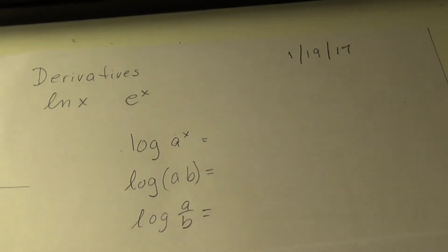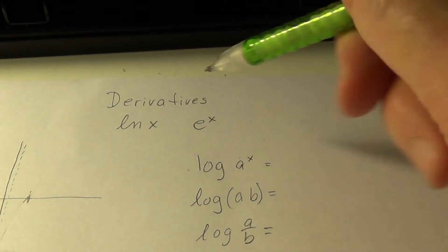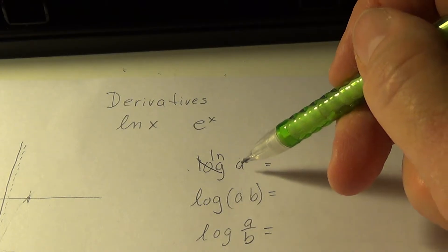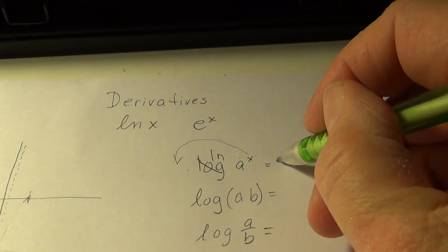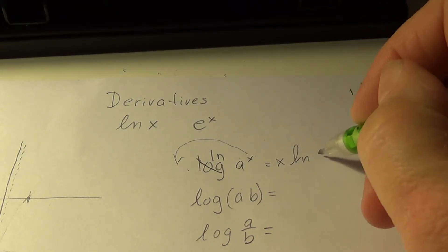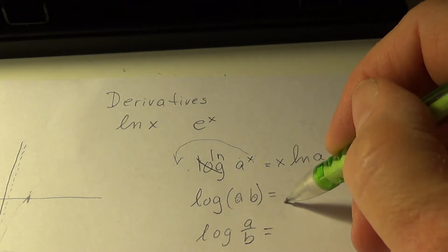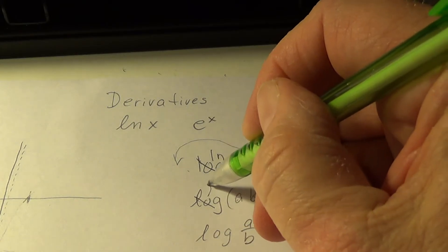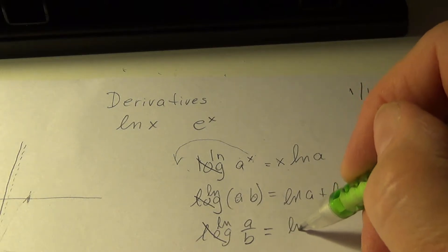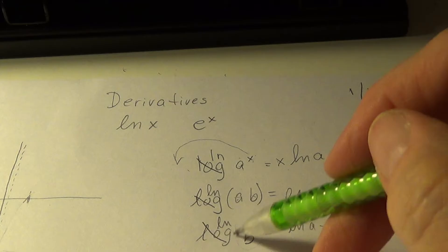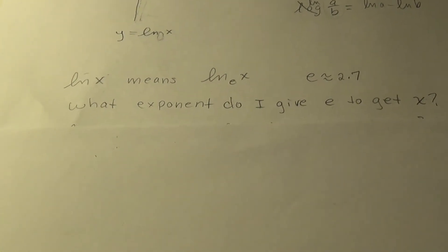Alright. Before I go on, I want to go back and recall the log rules, because sometimes they will help us with finding our derivatives. Remember log, and this goes for ln as well. So I'll put in ln as well, of some value raised to the x. That x can run down in front. And we proved all these last year. So this equals x ln of a. The exponent can run down in front and be a coefficient. The log of two quantities multiplied is the same as ln of a plus ln of b. And ln of a over b is ln of a minus ln of b. So sometimes we'll have our expressions like this, and we can write them like this. They'll be easier to work with finding their derivatives. So keep those laws in mind.